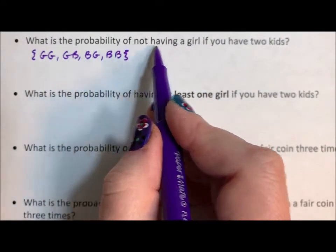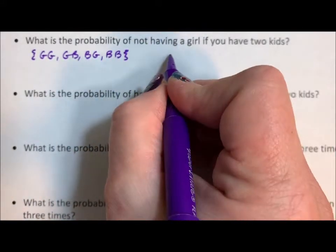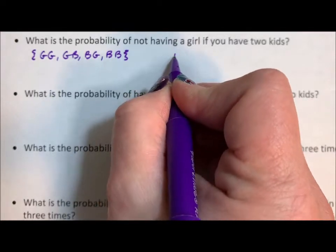What is the probability of not having a girl? Well, there's one event without having a girl—that's having two boys. So the probability of not having a girl is one out of four.